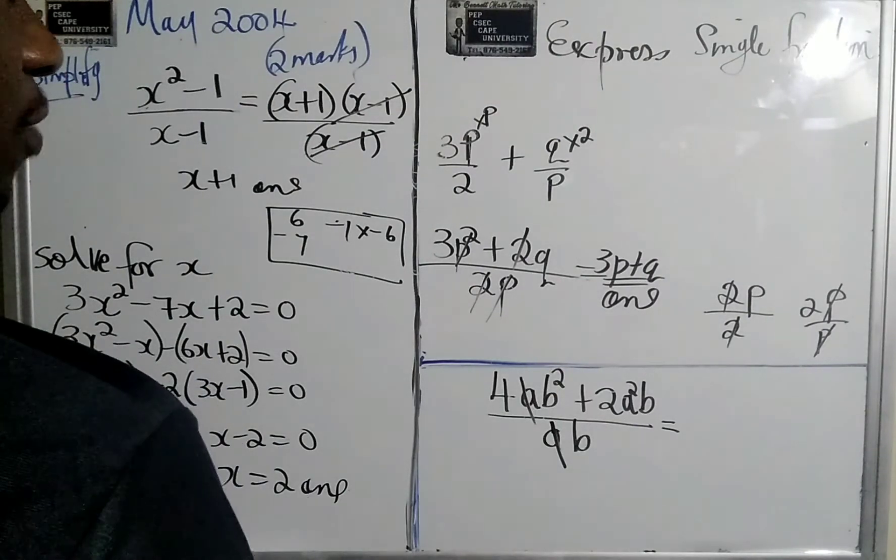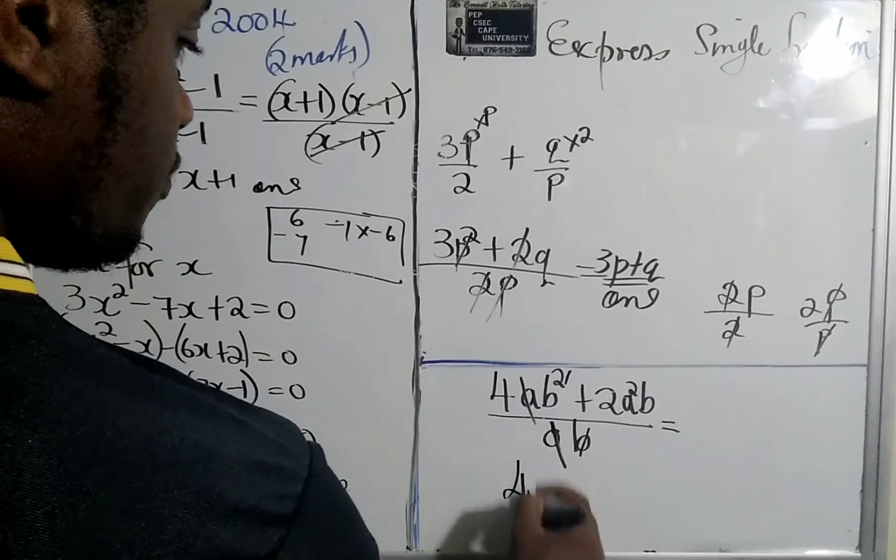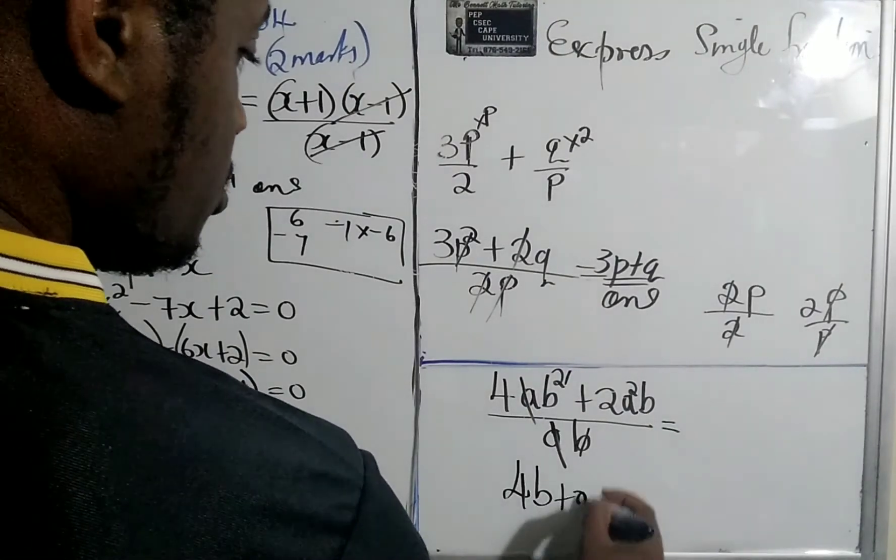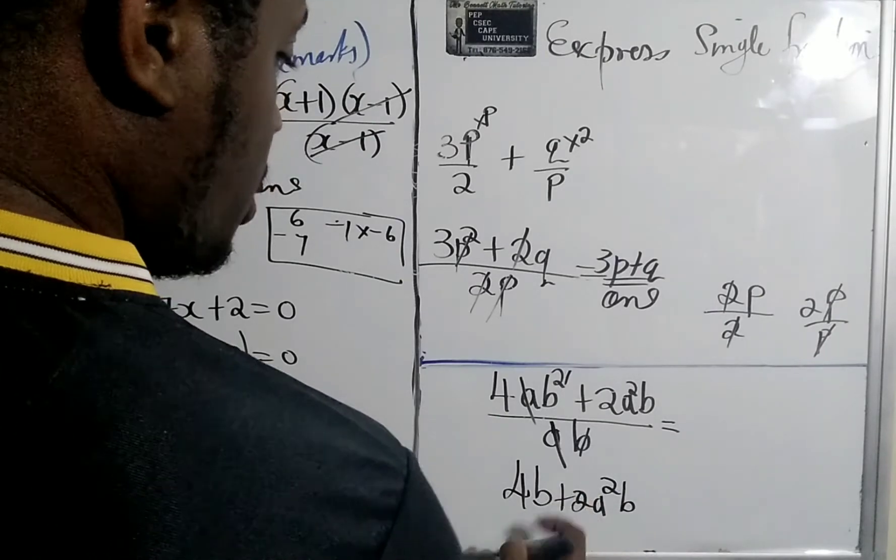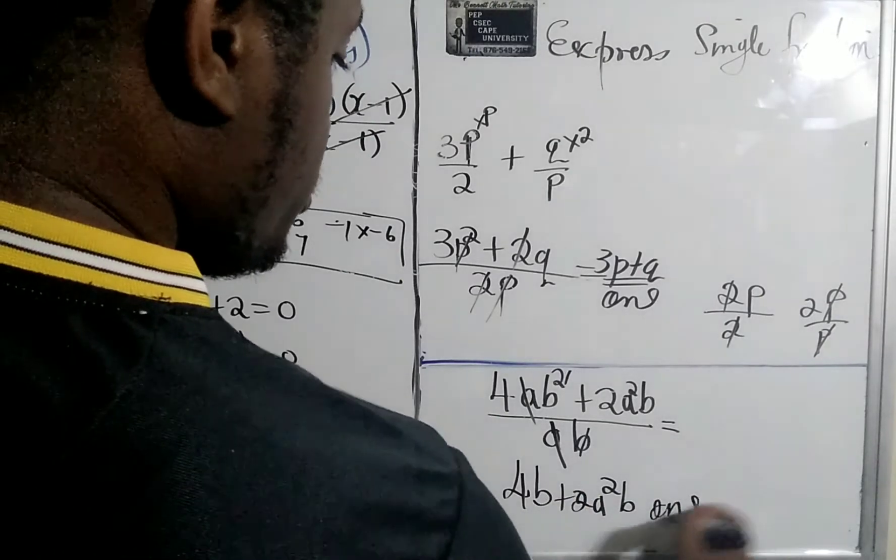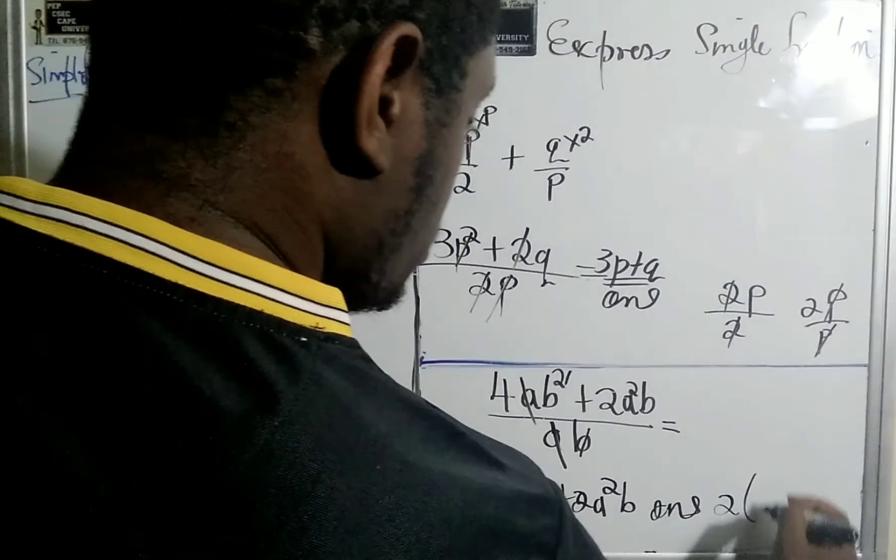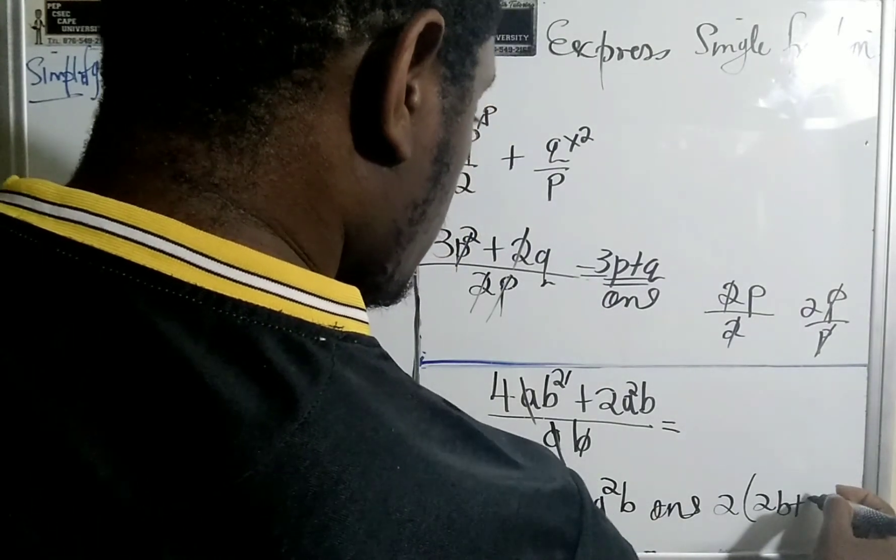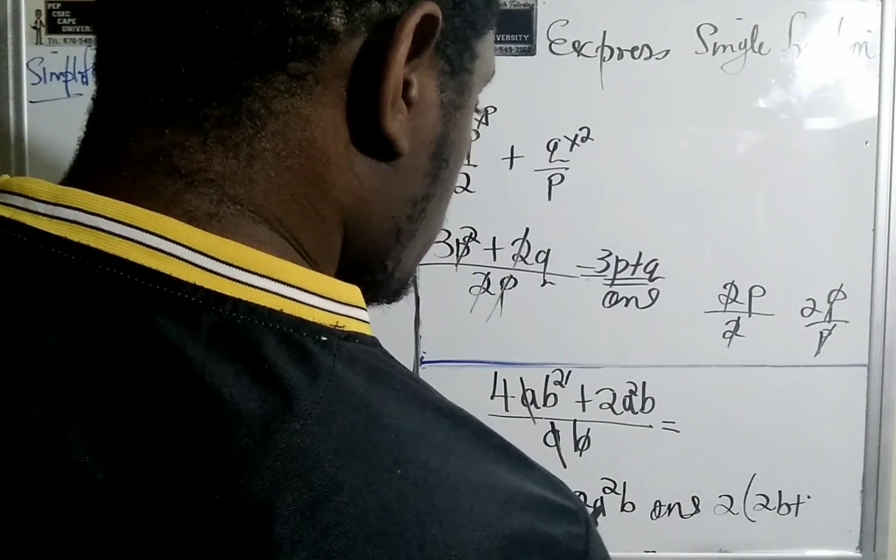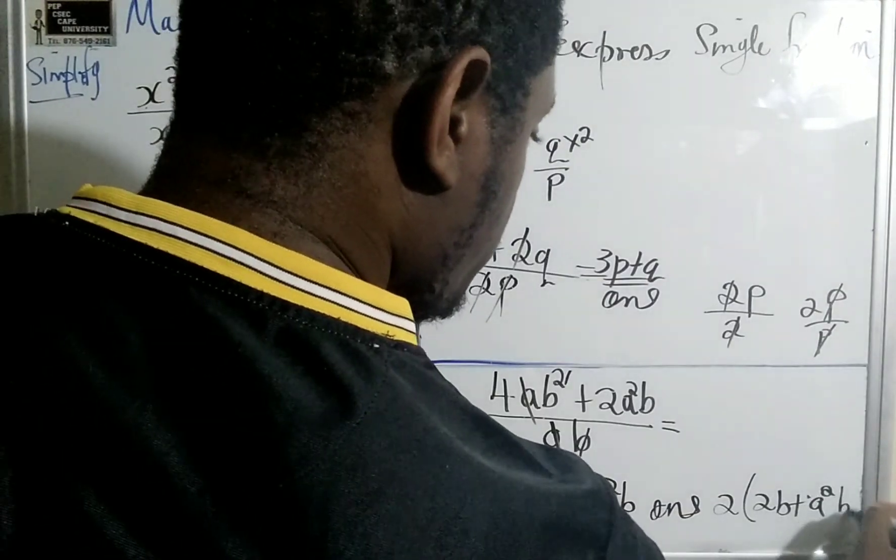We got like 4b squared. b cancel b. So we're left with 4b plus 2a squared b. You cannot add unlike terms. However, we're going to bring out the 2. If we factor out 2 and let it leave 2b plus... 2 and 2, so that'll leave a squared b.